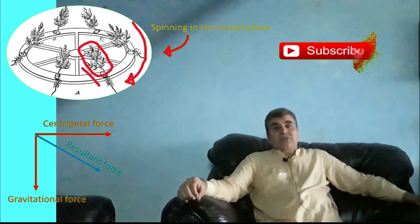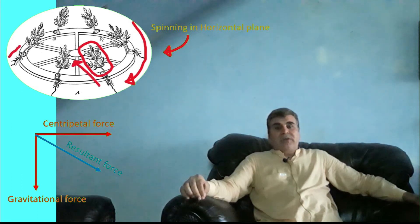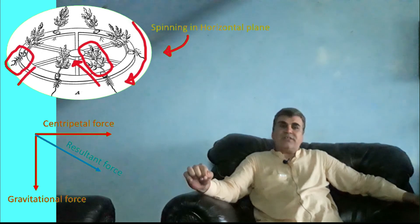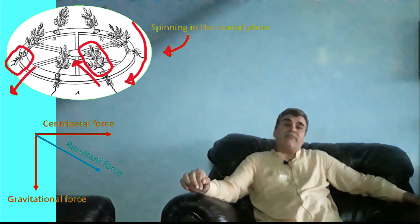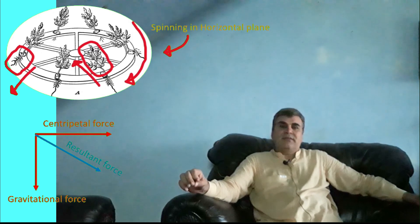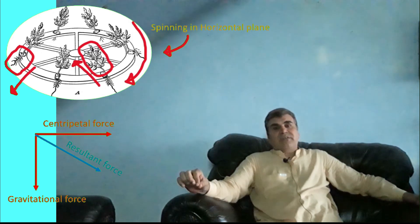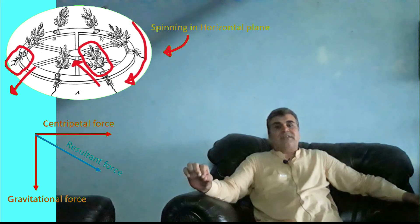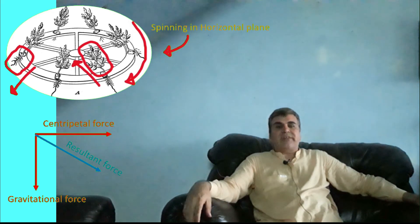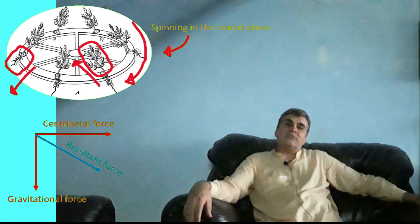Reducing the rotation to 80 rpm decreased the centripetal force to such an extent that the plants grew at an angle of 45 degrees to the vertical. Through this experiment, Thomas Knight was able to practically fool the plants through artificial gravity arising from their circular motion on the wheel.